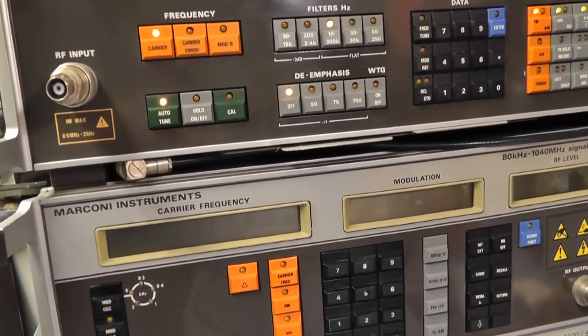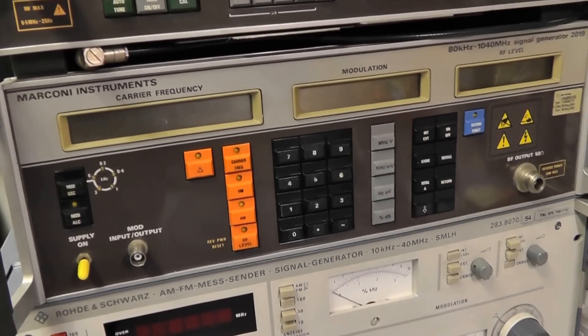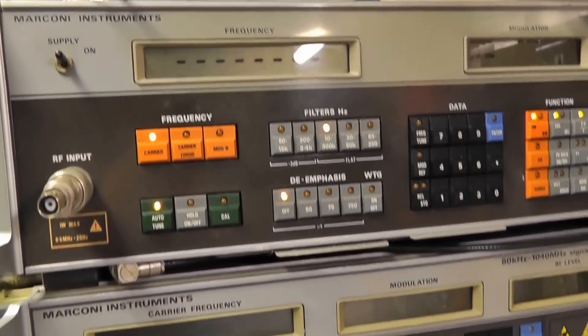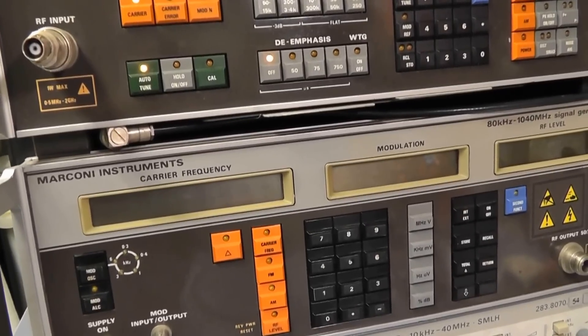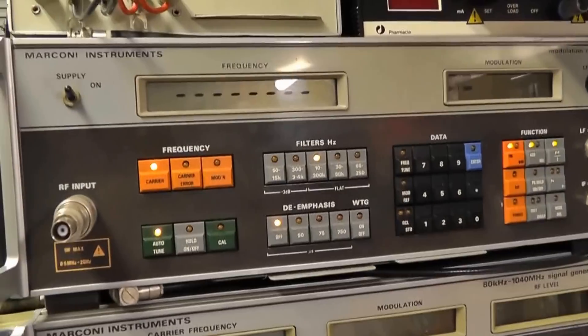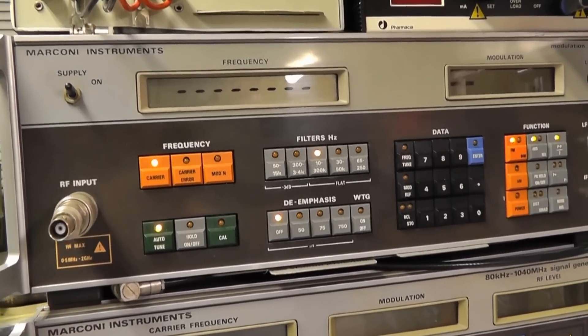So I thought the modulation meter had packed up. I messed about with it, turned it off and back on, and did a cal, but it made no difference. So I thought I'd plug the modulation meter into the Rohde & Schwarz—straight away got an indication on the meter.